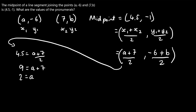Now we still have to find our b value, so let's use the y value of the midpoint. That's negative 1, so: negative 1 equals (negative 6 + b) all over 2. Multiplying both sides by 2 gives us negative 2 equals negative 6 plus b. Now we want to get rid of the negative 6, so we add 6 to both sides, and we get 4 equals b.